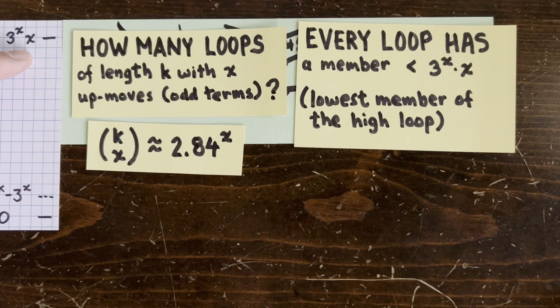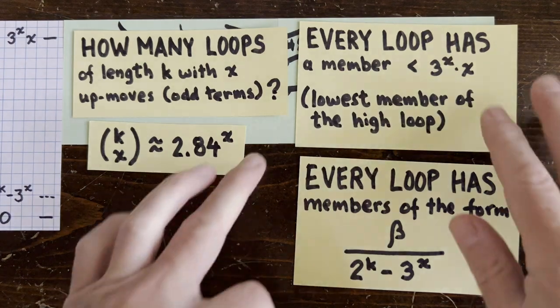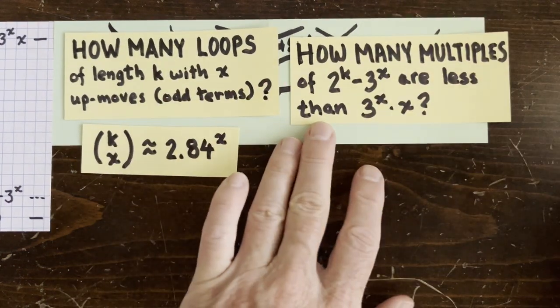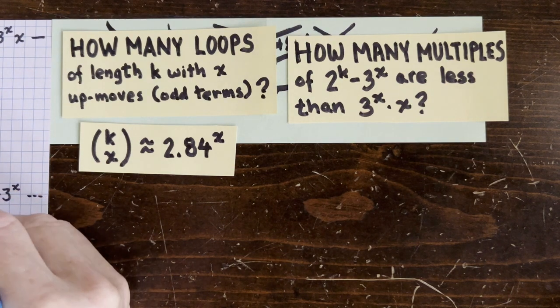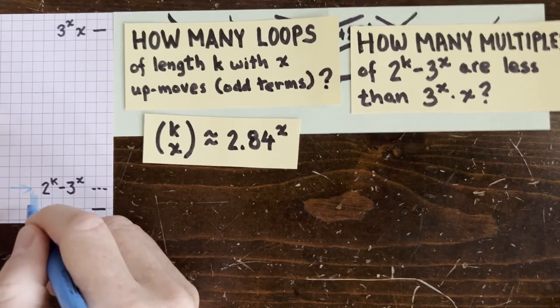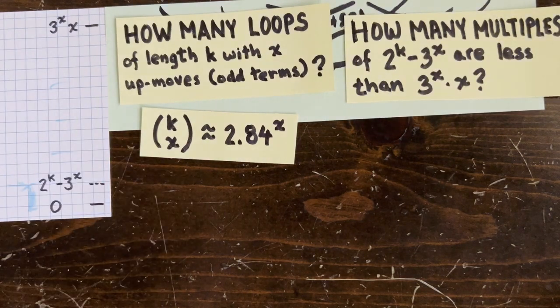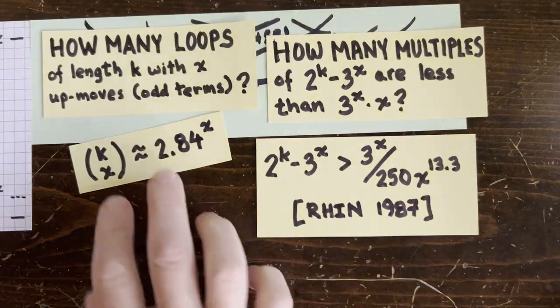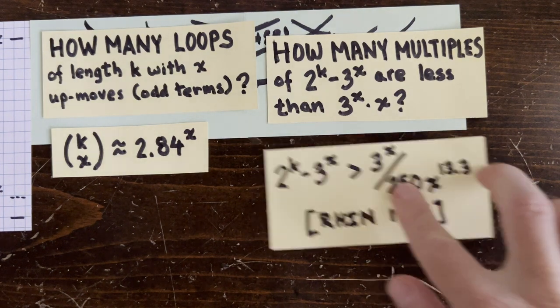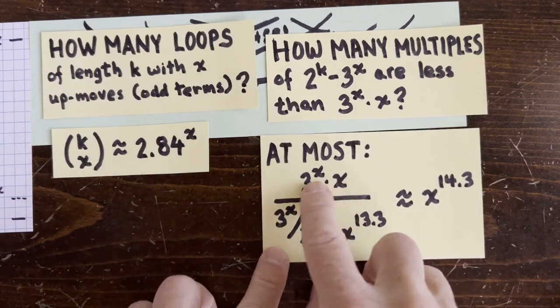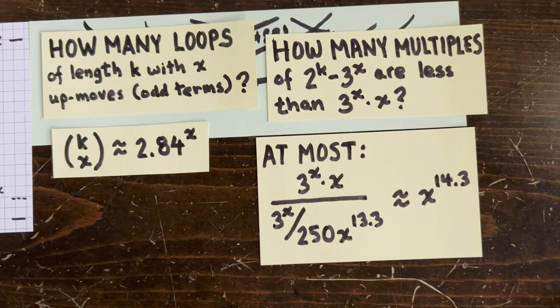And every member, of course, has the form beta over 2 to the k minus 3 to the x. So generally speaking, how many multiples of 2 to the k minus 3 to the x are less than 3 to the x times x? Well, if this difference between the powers is very small, we could have zillions of multiples of it in the range. But Baker and Wren taught us that the difference is actually very large. It's guaranteed, for example, to be bigger than 3 to the x over 250 times x to the 13.3. So cutting up 3 to the x times x into parcels of that size, we get around x to the 14th multiples at most.